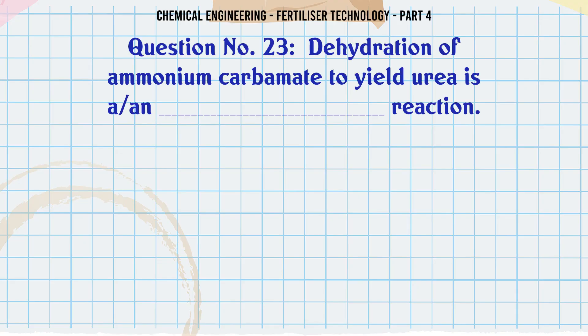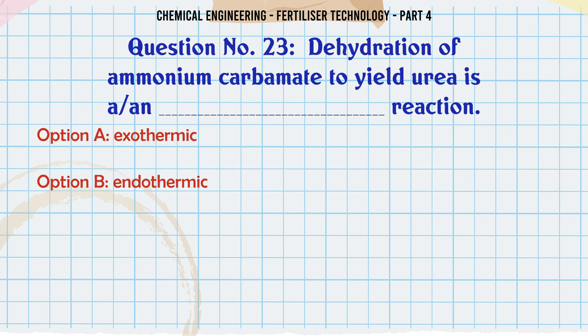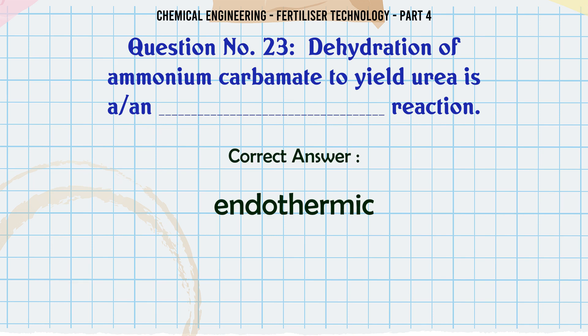Dehydration of ammonium carbamate to yield urea is an __ reaction: a. exothermic, b. endothermic, c. autocatalytic, d. catalytic. The correct answer is: endothermic.